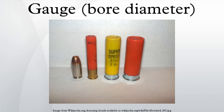The forcing cone can be as short as a fraction of an inch, or as long as 4 inches on some guns. At the muzzle end of the barrel, the choke can constrict the bore even further, so measuring the bore diameter of a shotgun is not a simple process, as it must be done away from either end.